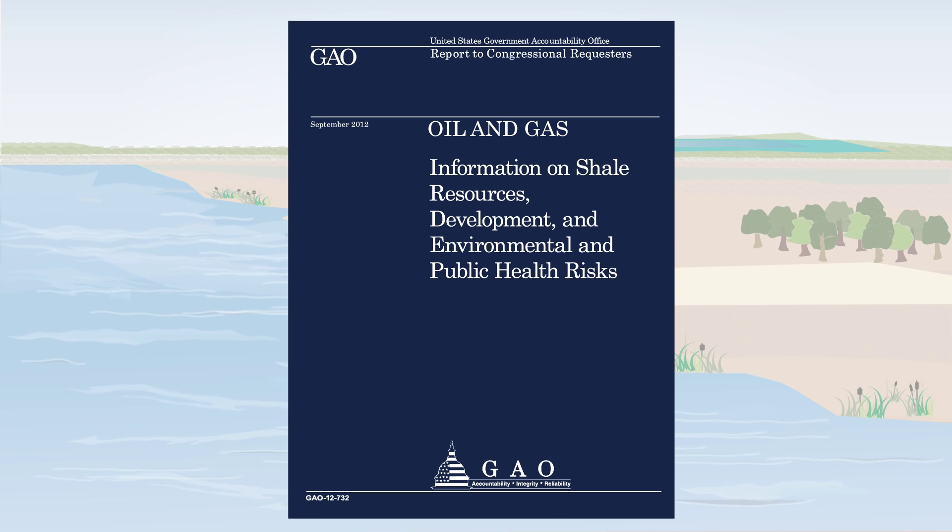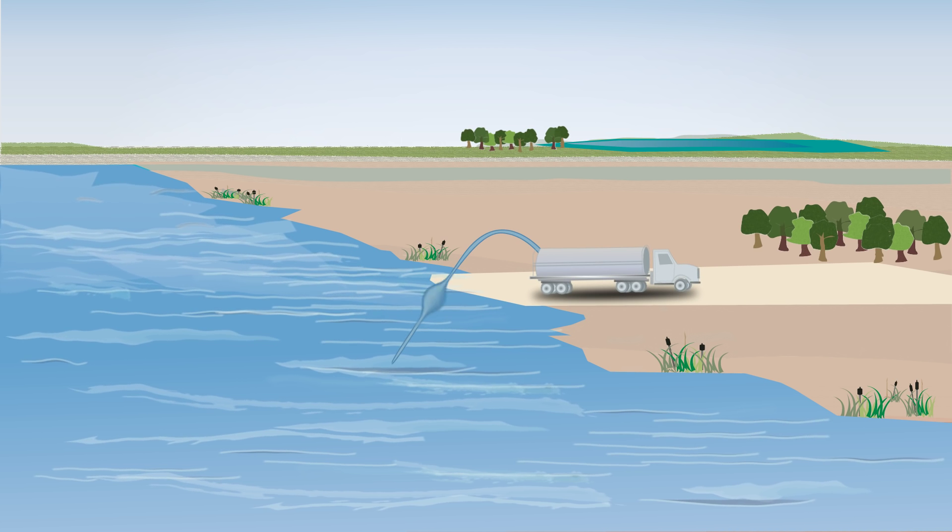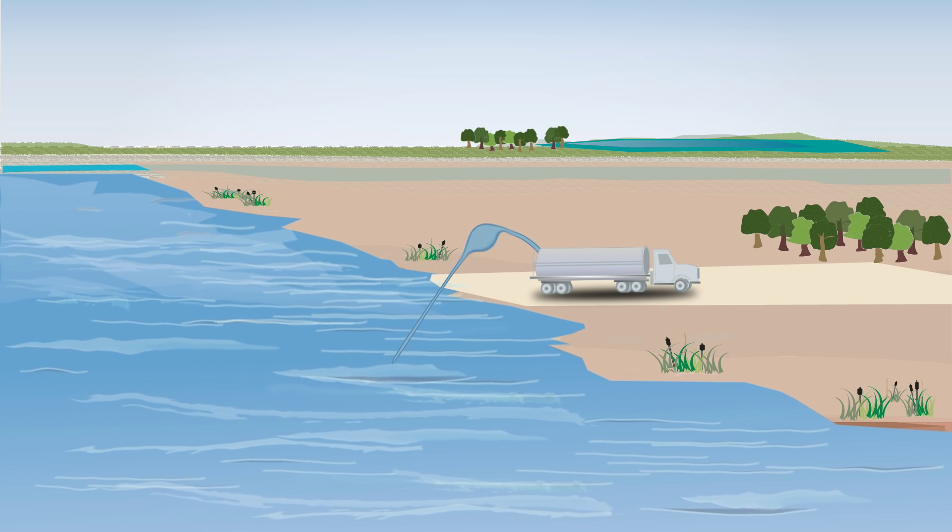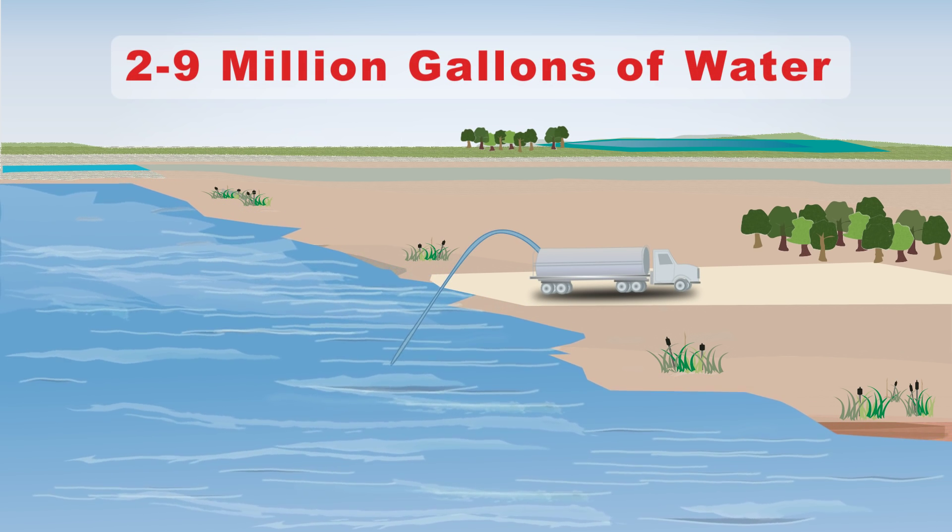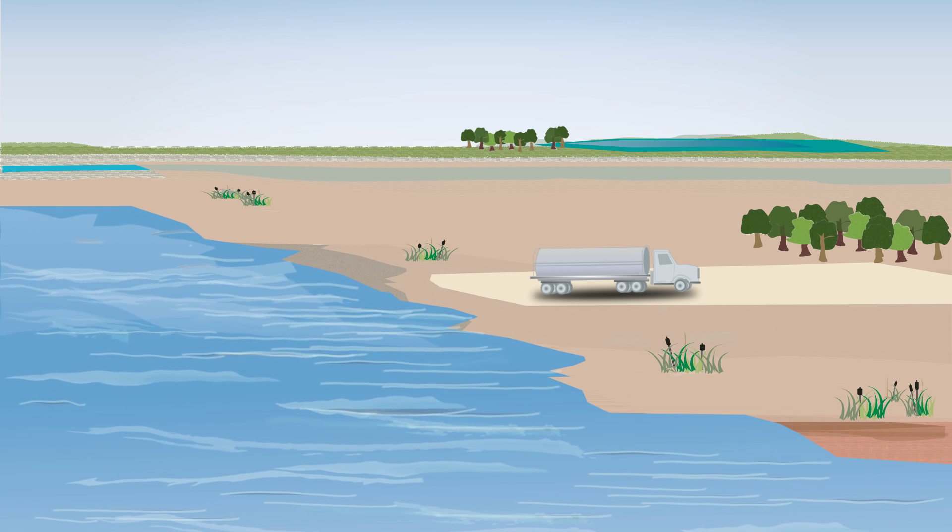However, this video specifically discusses water use in the process of hydraulic fracturing. Hydraulic fracturing, also known as fracking, can use anywhere from 2 to 9 million gallons of water per well. Let's look at how the process is designed to work and how the water is used.